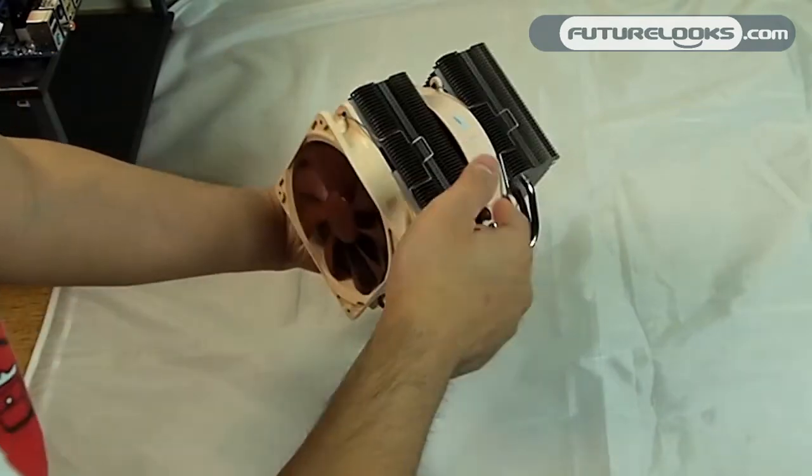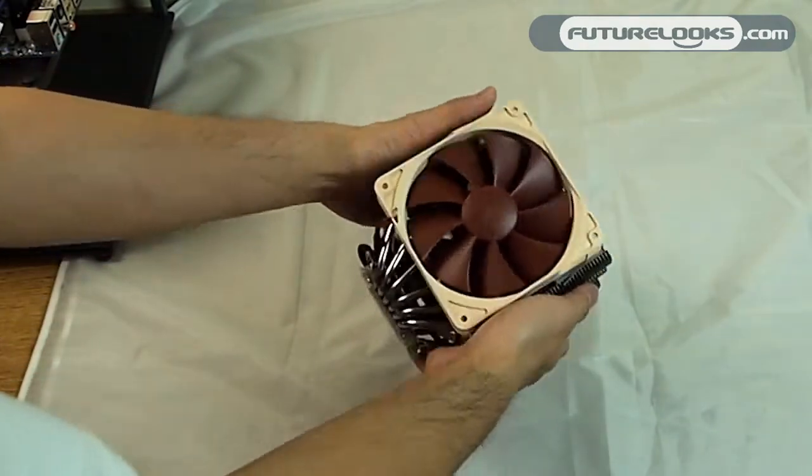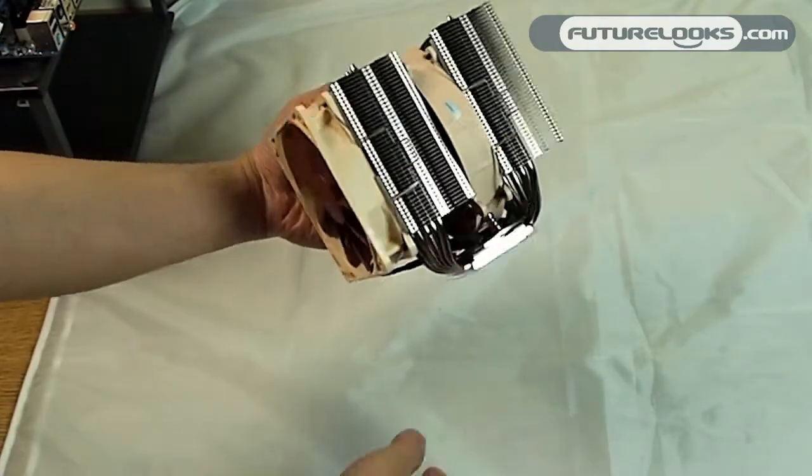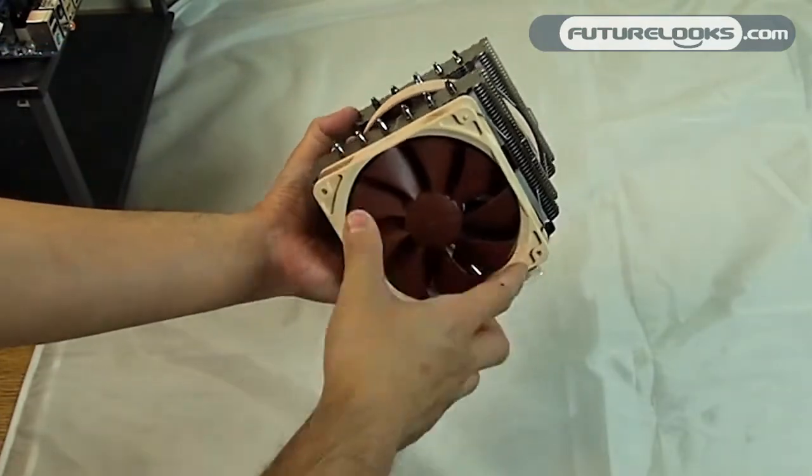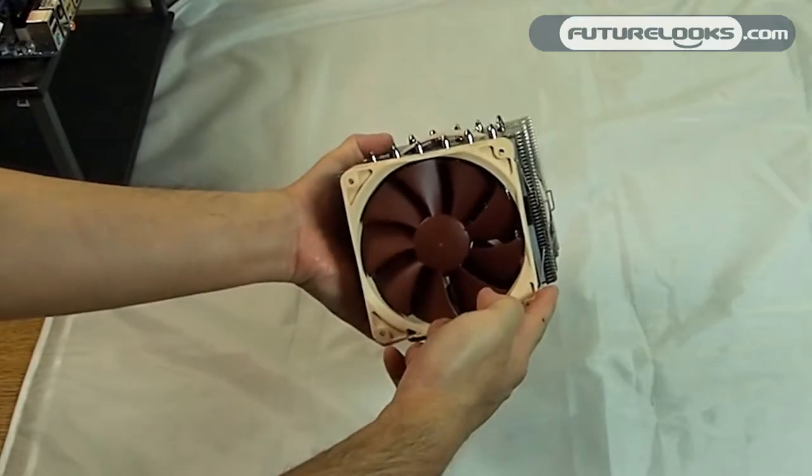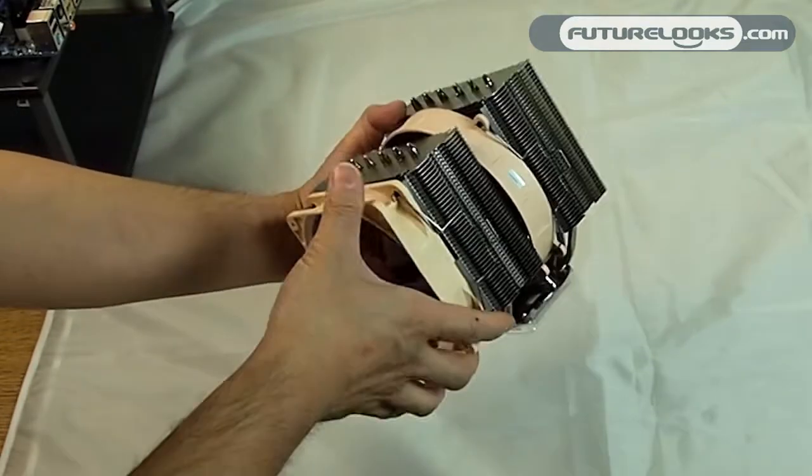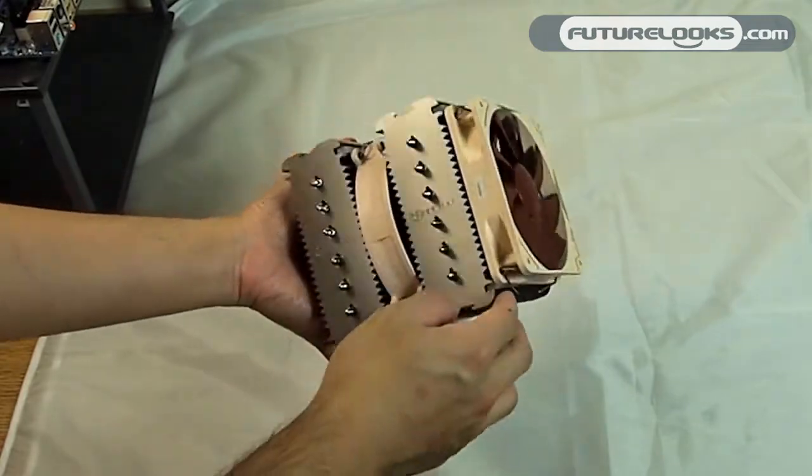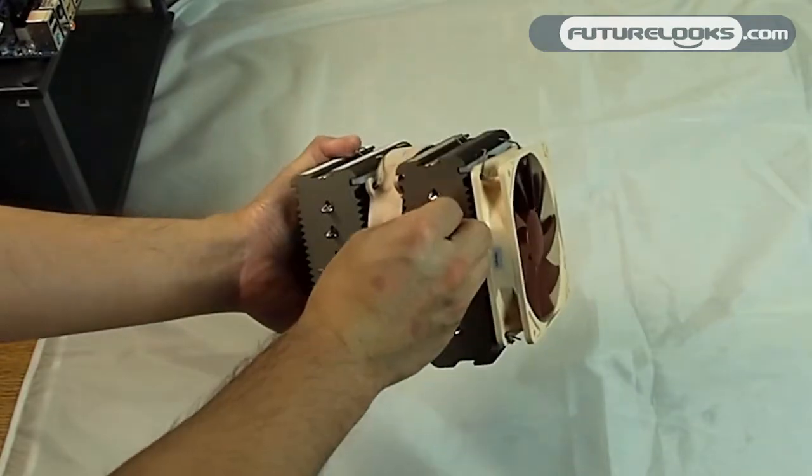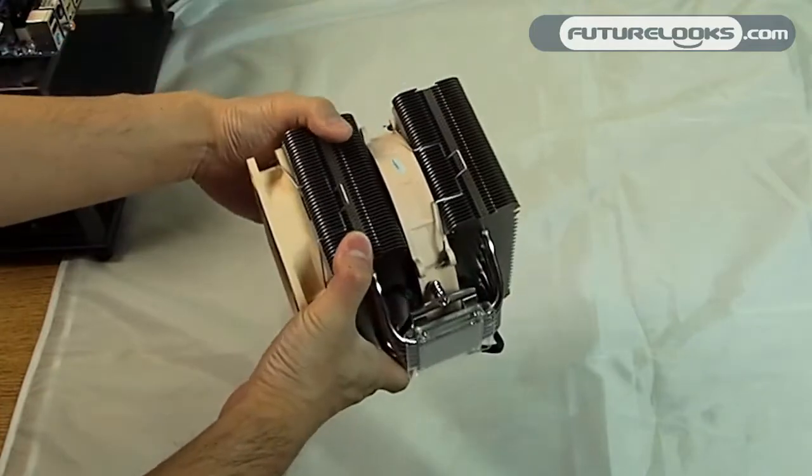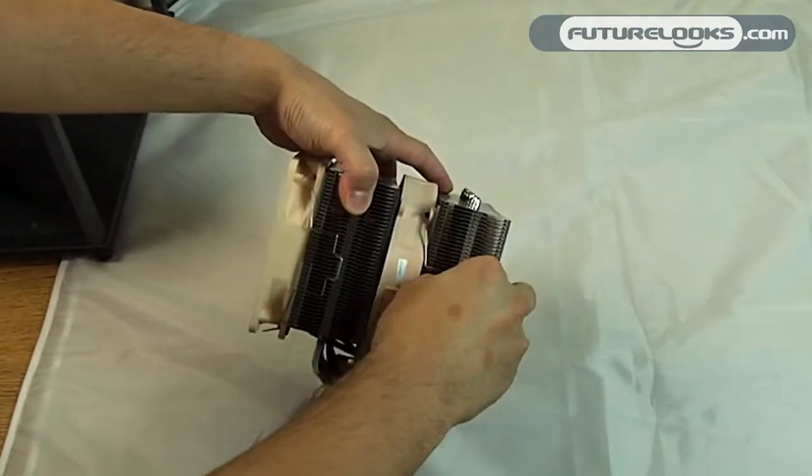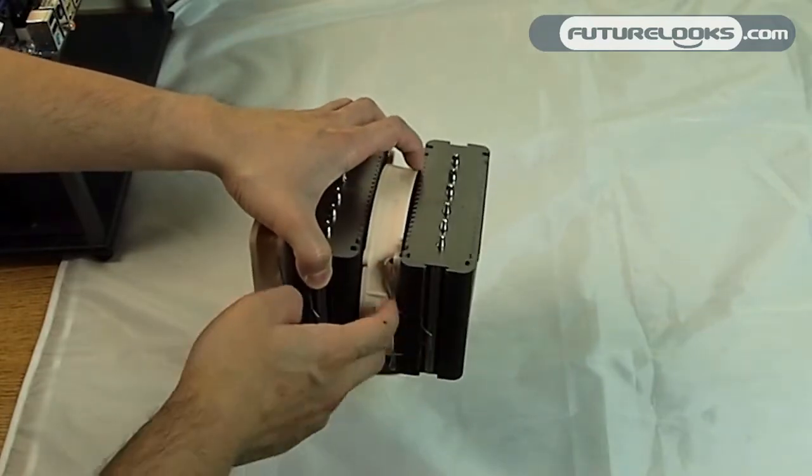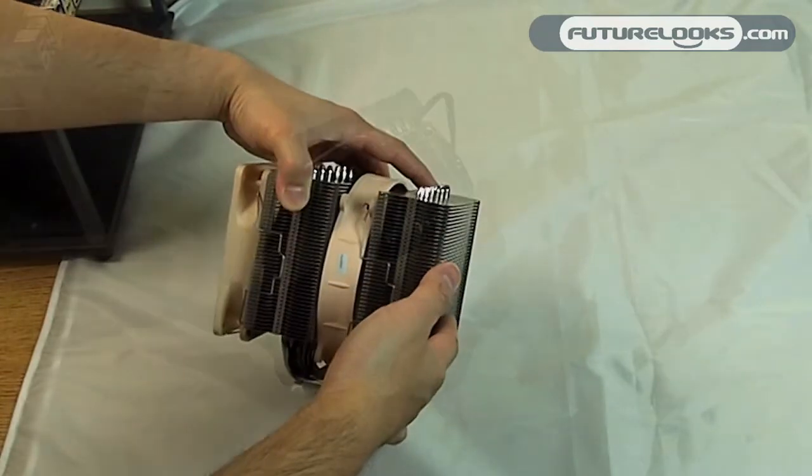As you can see, the Noctua NHD14 is a massive cooler that uses two sets of radiators and two sets of fans. The first fan is a 120mm unit attached using some spring clips and is dampened using some silicone pieces that are sandwiched in between the fan itself and the radiator. The second fan also uses clips and it too has some silicone in between to dampen vibration between the fan itself and the second radiator.